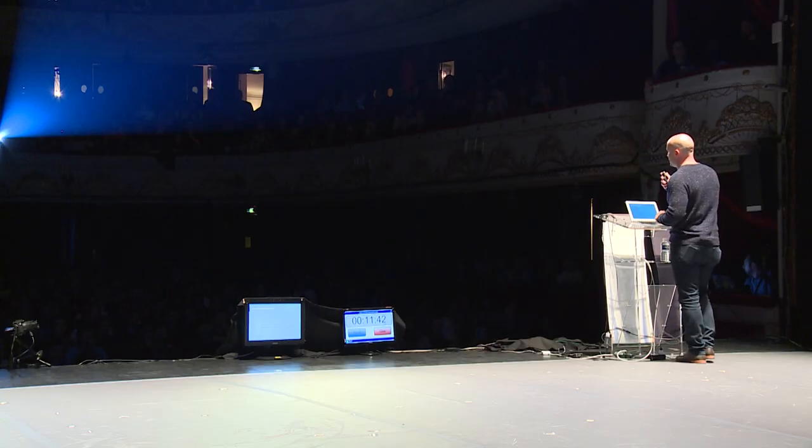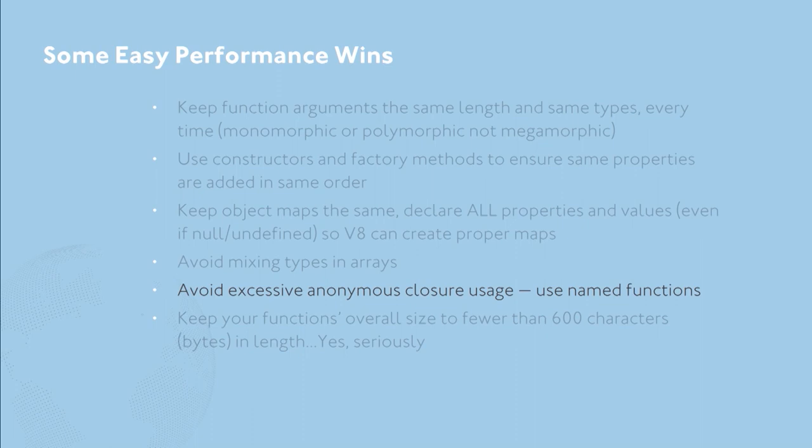Another thing that's interesting about writing Node apps where you can actually get some performance gains is not using random callbacks all over the place or anonymous functions. There are two reasons you want to do this. One, somebody else is going to have to maintain your code — probably a good idea to name your functions. And two, when they're named, V8 will actually optimize them.